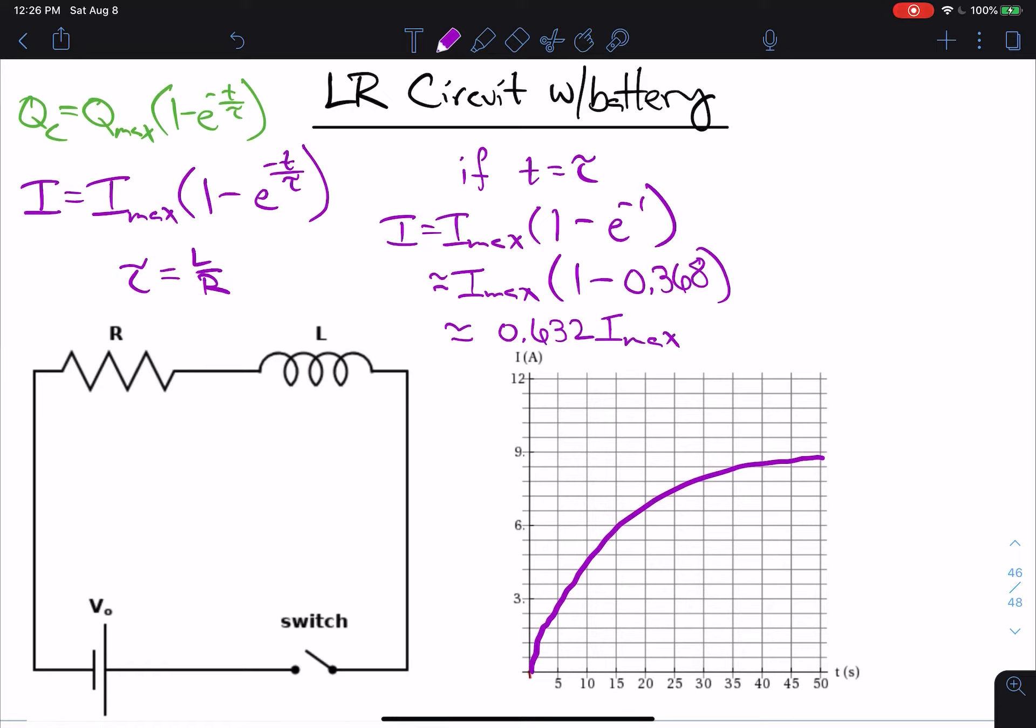And my max current here is 9 amps. That's what I've done. So I want 0.632 of that. Well, 0.632 of I max is about 5.7. So where is 5.7? Well, this is 6. There are 5 tick marks up to get to 9. And that's a change of 3. So 3 divided by 5 is 0.6. So if I go down, this would be 5.4. So 5.7 is essentially right in the middle. So right in the middle is 5.7.